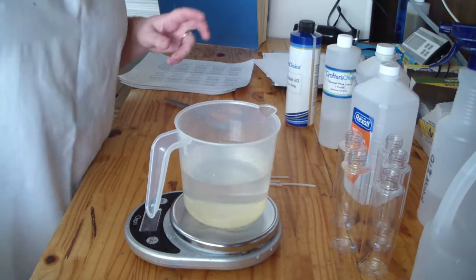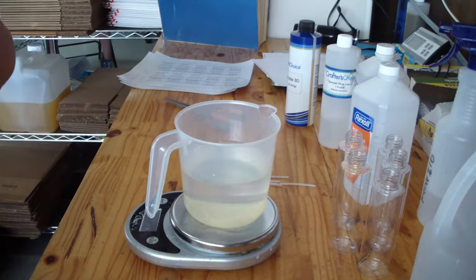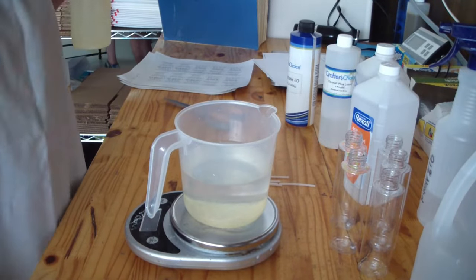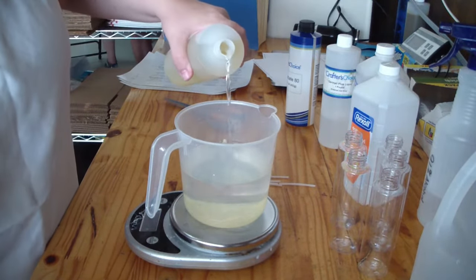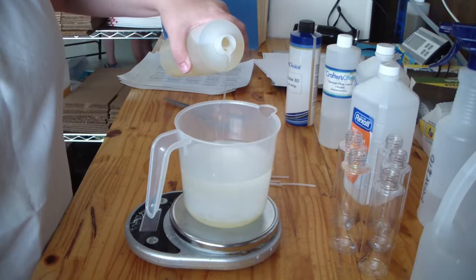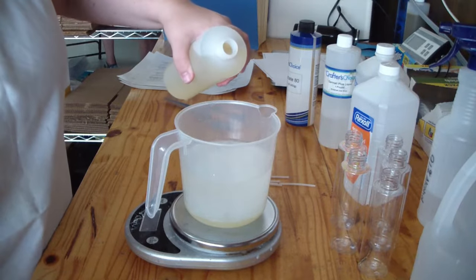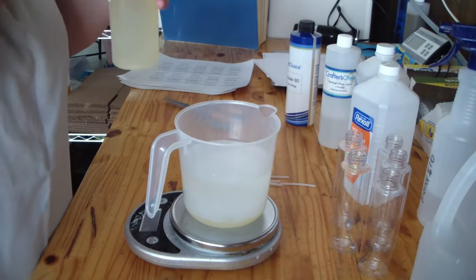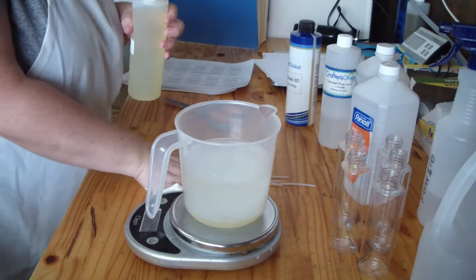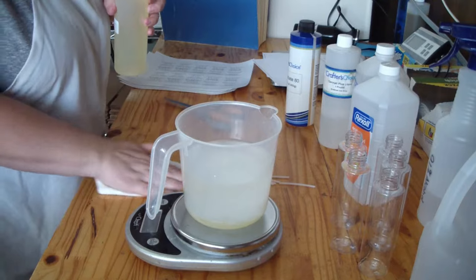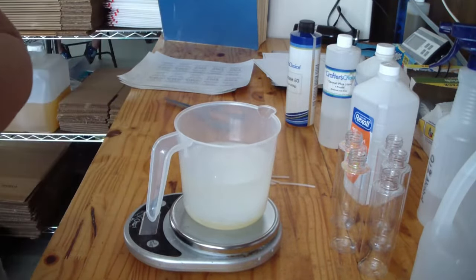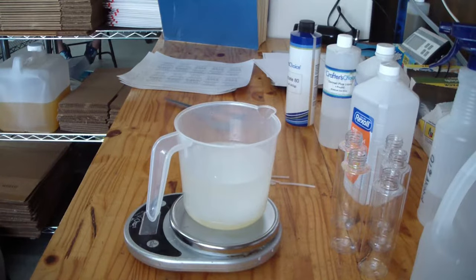Now I need one ounce of fragrance so I'm going to start with Drakkar. That's the one Eric requested. You'll see when I put the fragrance in here it gets really cloudy. I've made a mess with that fragrance. I should have had a flip top cap on there. Make sure to touch my scale.